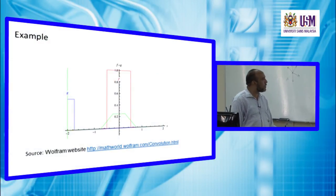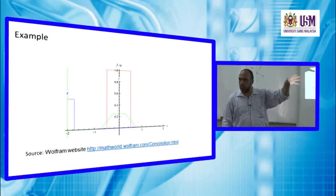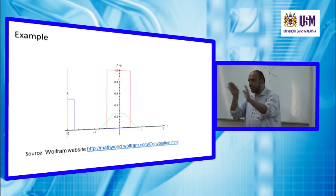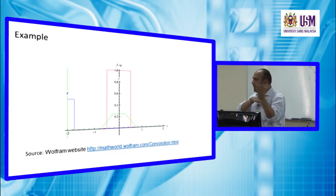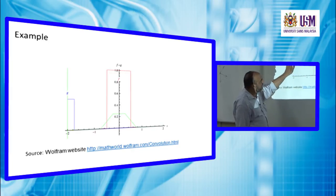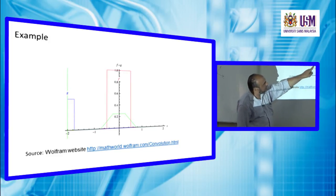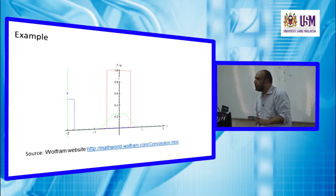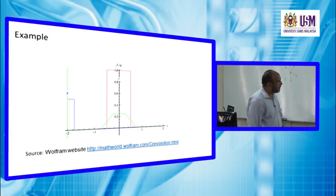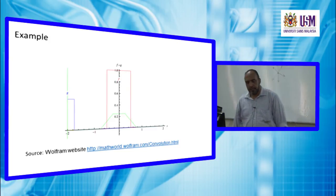We have an example showing convolution using two box car functions. These two functions are symmetric, so the flip is the same as the original. One function is then shifted until it comes to overlap with the other. The green line here represents the convolution of f(x) with g.